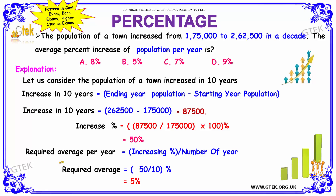The required average per year is the increasing percentage divided by the number of years. So the required average is 50 divided by 10, which gives 5 percentage. Therefore, option B — 5 percentage — is the answer.